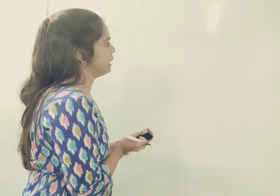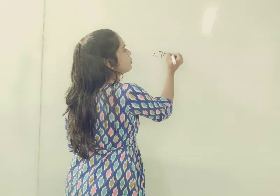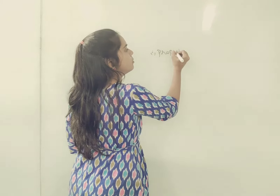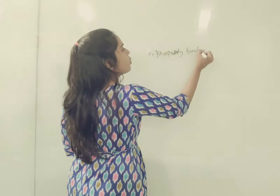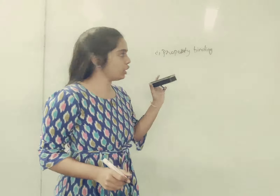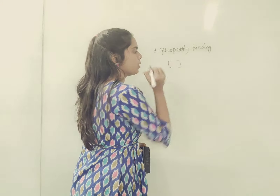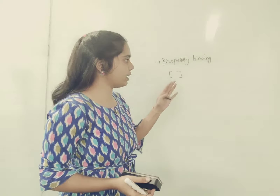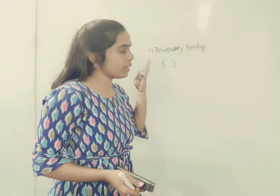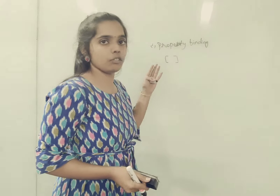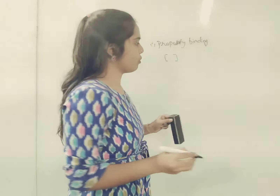Let's first talk about property binding. We denote property binding using square brackets. We use property binding to bind a property to the element — to the actual data. When we want to give a property, then we use property binding.